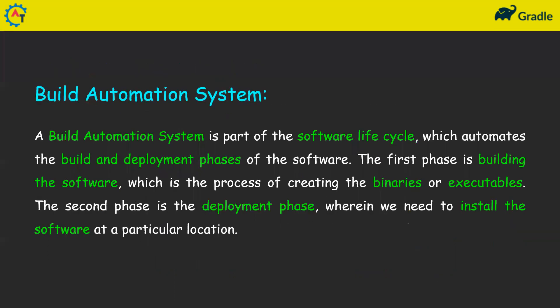A build automation system is part of the software life cycle. It automates the build and deployment phases of the software. Once you have written your code, you need to build and deploy the software. The first phase is building — creating the binaries or executables. The second phase is deployment — installing the software at a particular location. All these things are automated with the help of a build automation system.